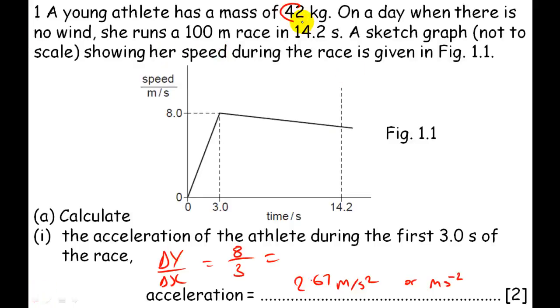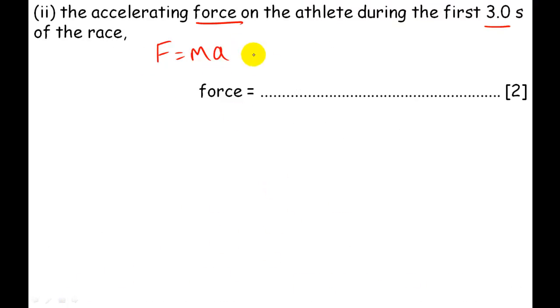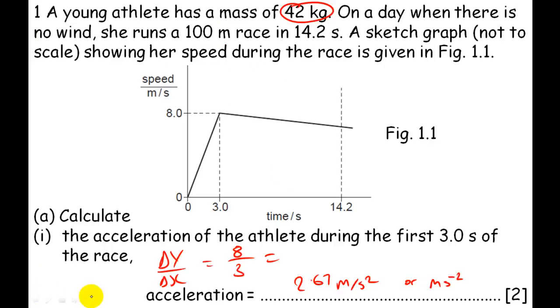And if we go back, we can see we were given the mass of the lady. So we have the acceleration now, 2.67, and we have the mass. So we can just substitute it straight into this. That was 42, wasn't it? 42, yeah.